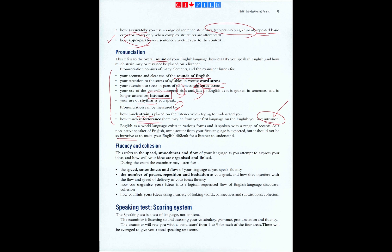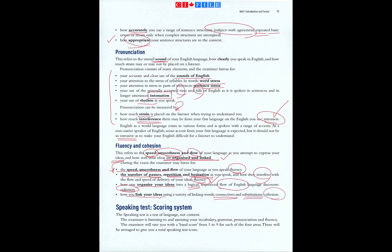Fluency and cohesion refers to the speed, smoothness, and flow of your language as you attempt to express your ideas, and how well your ideas are organized and linked. The examiner listens for the speed, smoothness, and flow of your language — fluency — the number of pauses, repetition, and hesitation as you speak and how they interfere with the flow and speed of delivery — fluency — how you organize your ideas into a logical sequenced flow of English language discourse — cohesion — and how you link your ideas using a variety of linking words like connectives and substitutions — cohesion.